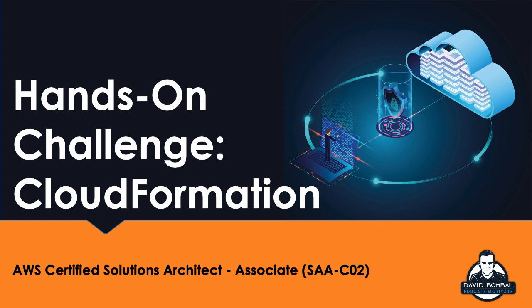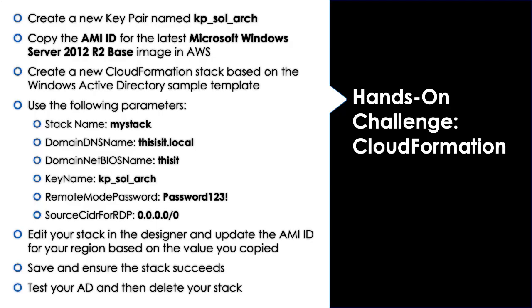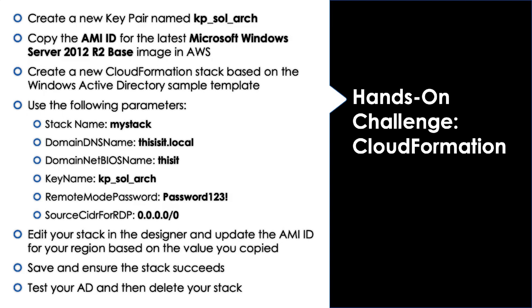In this hands-on challenge, you'll build an Active Directory server in your AWS cloud using CloudFormation. I want you to create a key pair named KP Solution Architect, and then I want you to copy the AMI ID for the latest Microsoft Windows Server 2012 R2 base image in AWS.